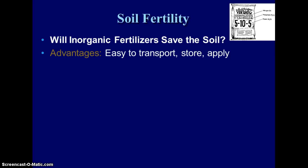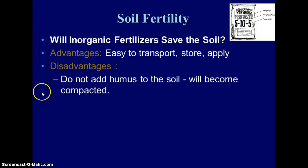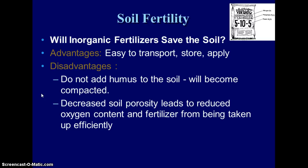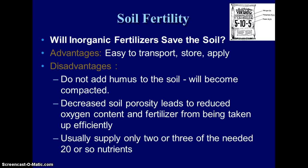Advantages of inorganic fertilizers: they are easy to transport, purchase, and apply, and you can get the exact amount of each nutrient you need — for example, a bag with 5% nitrogen, 10% phosphate, and 5% potassium. Disadvantages: they do not add humus or organic material, so the soil becomes compacted, decreasing porosity and reducing water and air uptake by plants. Organic fertilizers also provide around 20 or more additional nutrients compared to inorganic ones.